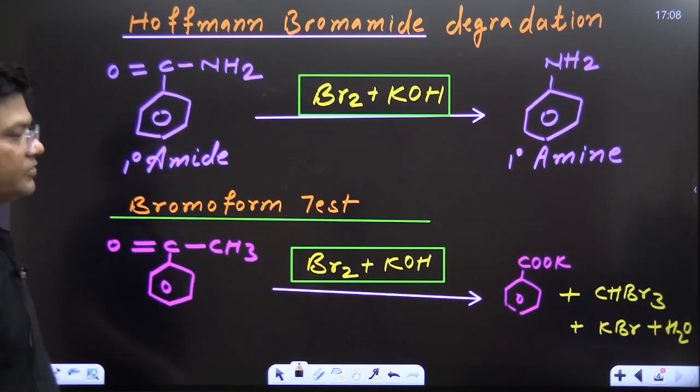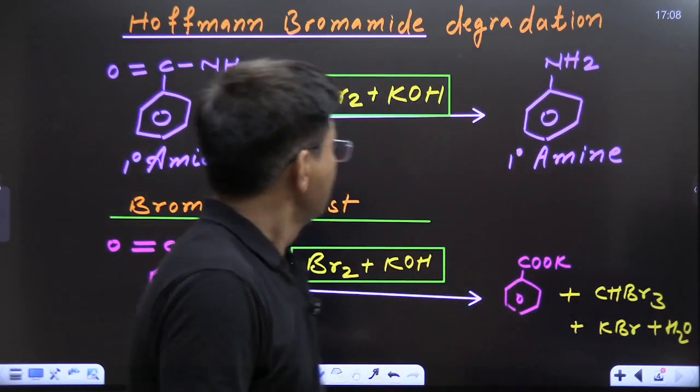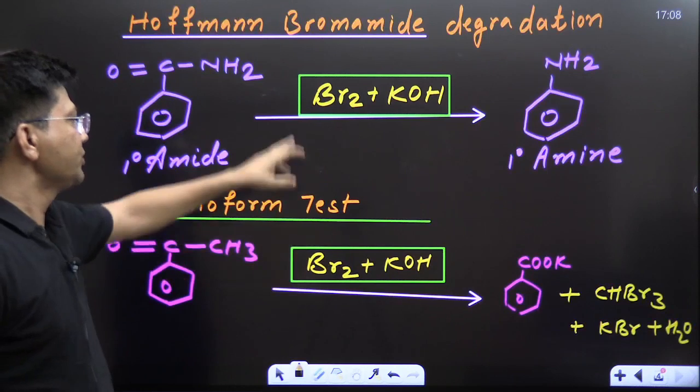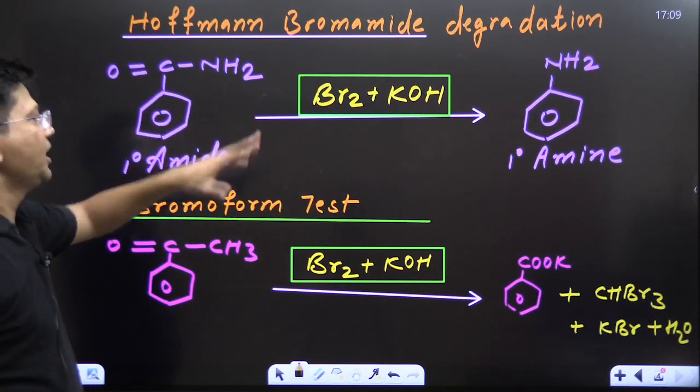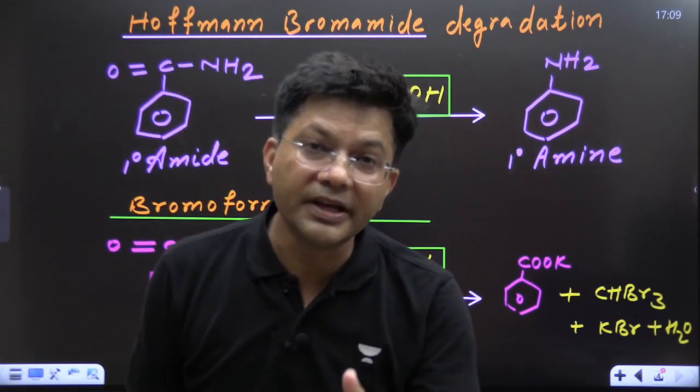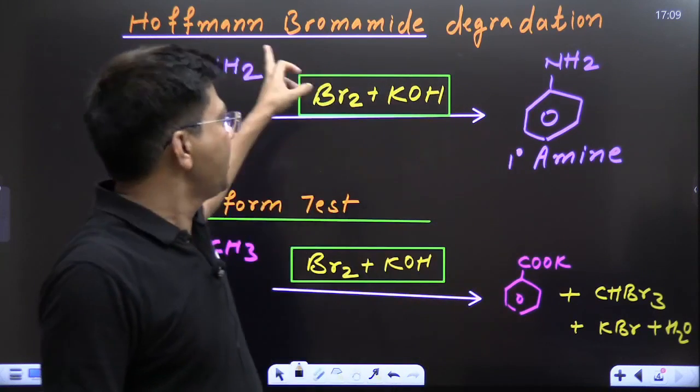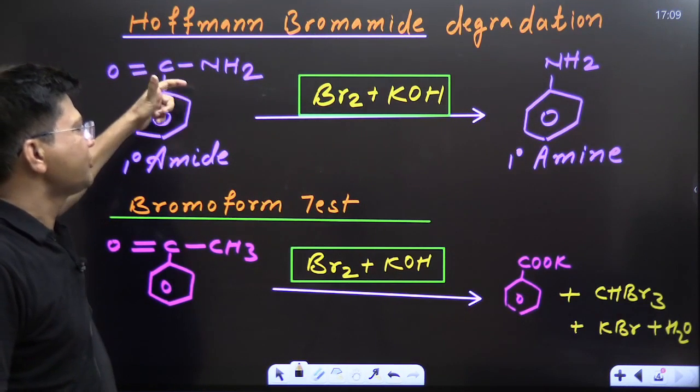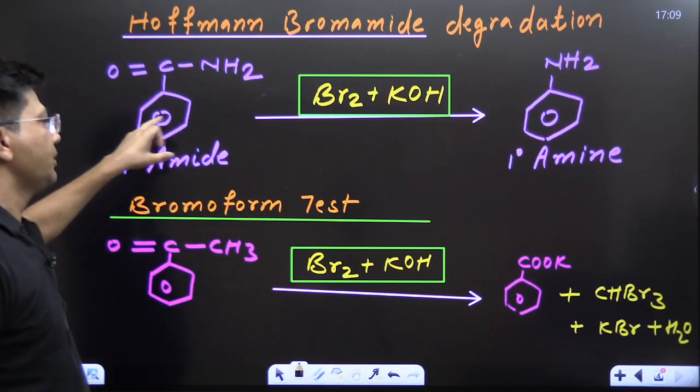Now see two more reactions. These are total six reactions. Four already have explained, now two more. Here Br₂KOH. Earlier what was there? Chloroform KOH. And here Br₂KOH in both the two reactions. If amine, whether it is aliphatic or aromatic, one degree amide reacts with Br₂KOH, this is known as Hoffmann bromamide degradation reaction or Hoffmann bromamide rearrangement or Hoffmann bromamide rearrangement reaction. This is shortening of the chain. In this reaction, one degree amide converts into one degree amine, there is loss of carbonyl group. So this test, this is not the test actually because no color, no fume is there. This is a simple reaction. So Hoffmann bromamide degradation, one degree amide converts into one degree amine.